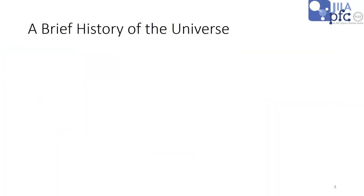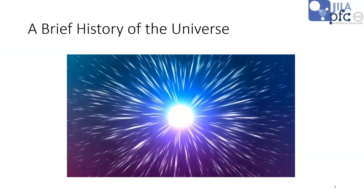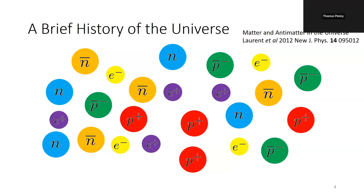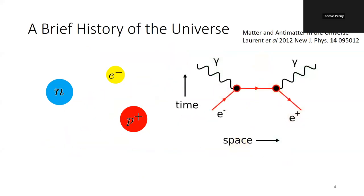So why are we interested in measuring the electron electric dipole moment? I'll start with a very brief history of the universe. Once upon a time, the Big Bang happened. After the Big Bang, the universe was very energetic and very dense — perfect conditions for pair production to happen. So particles and their antiparticle partners can pop into existence. We have neutrons, protons, electrons, and their antiparticle partners. There were a whole bunch of them that appeared just after the Big Bang.